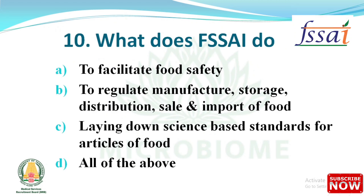Next question: what does FSSA do? Options are: to facilitate food safety; to regulate manufacture, storage, distribution, sale and import of food; laying down science-based standards for articles of food; all of the above. The right answer is option D: all of the above.